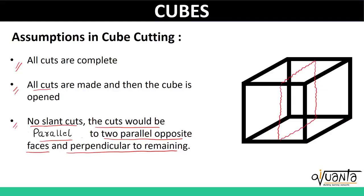Let us see how. So if this is the cut made, then this cut is parallel to this face and the face opposite to it, and it will be perpendicular to the remaining four faces — this face, this face, this particular face and this particular face. I hope the assumptions are clear to you.